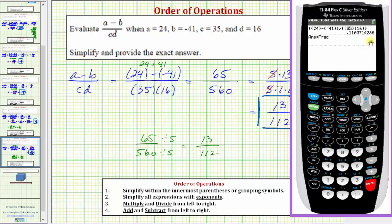The expression is equal to 13/112 when a equals 24, b equals negative 41, c equals 35, and d equals 16.